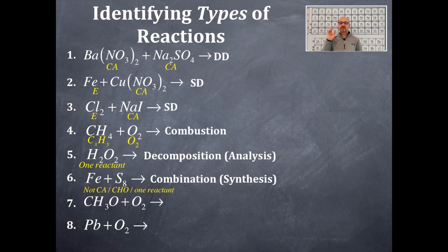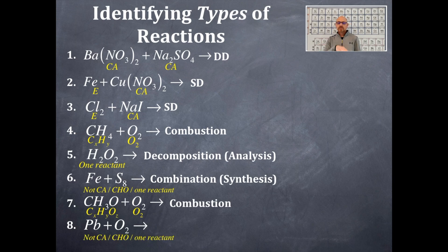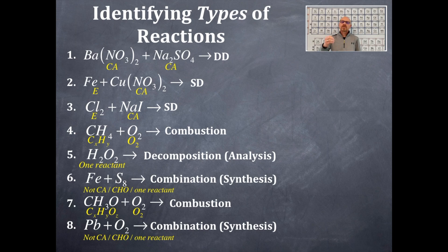Number seven: I have carbons, hydrogens, and oxygens, and molecular oxygen — CₓHᵧOz plus molecular oxygen. That is a combustion type of reaction. Number eight: I have an element, lead, and oxygen. You might think molecular oxygen could mean a combustion reaction, but it's not following the combustion pattern of carbons and hydrogens. There's no California, so it's not a single or double displacement. And there's not one reactant, so it can't be a decomposition. I'm left with only one type: a combination or synthesis. You first have to figure out that pattern in identifying the type of reaction, which will really help you in writing the products and subsequently balancing those chemical reactions.